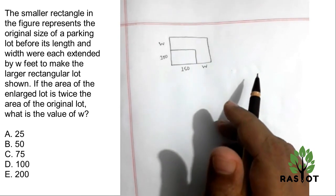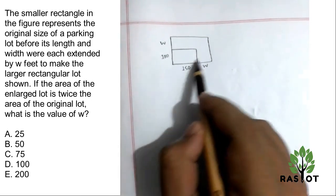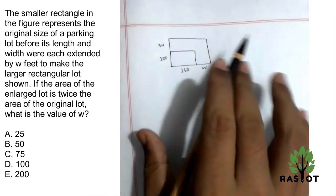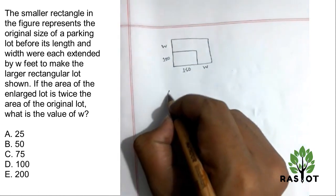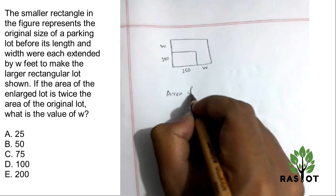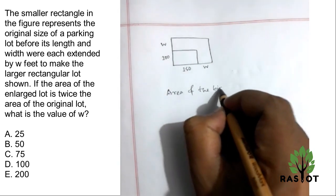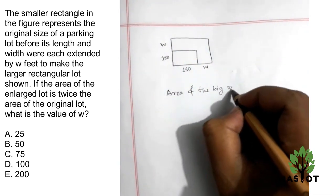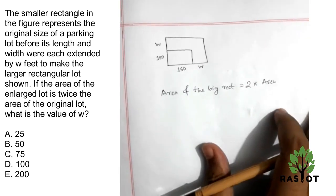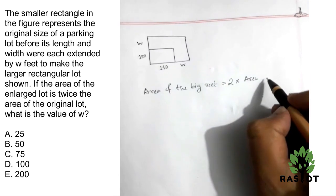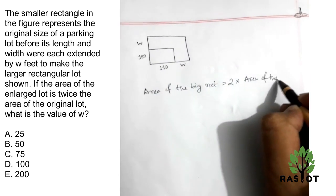Okay, so according to the question, there is a smaller rectangle. There is actually a criteria that the area of the big rectangle is twice the area of the smaller rectangle.